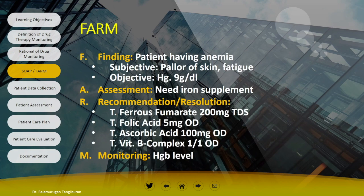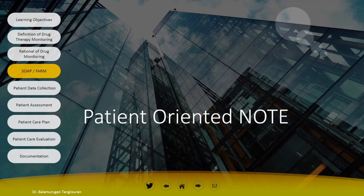We can apply the same approach using FARM format. FARM is a mnemonic for Finding, Assessment, Recommendation, and Monitoring. It is similar to SOAP — the difference is that instead of 'Plan' we have 'Monitoring,' and the plan comes under Recommendation. Finding combines both subjective and objective measures. Assessment is the same as in SOAP. Recommendation here is to provide Hematinics — a combination of supplements to increase hemoglobin: ferrous fumarate, folic acid, ascorbic acid, and vitamin B complex. Monitoring is done using hemoglobin lab values.